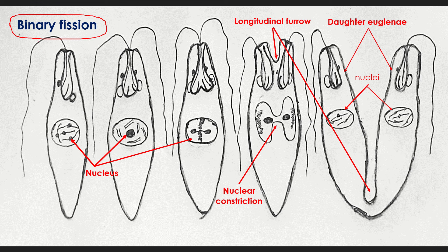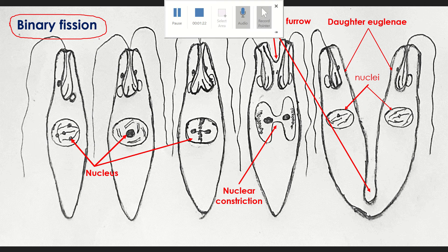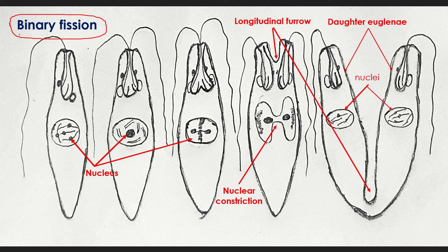Binary fission takes place under favorable conditions of water, temperature, and food availability. Whenever there are favorable conditions, the process of binary fission takes place in Euglena. In this case, Euglena divides by simple longitudinal fission, and the parent Euglena is divided into two daughter individuals, where one is the plain mirror image of the other.